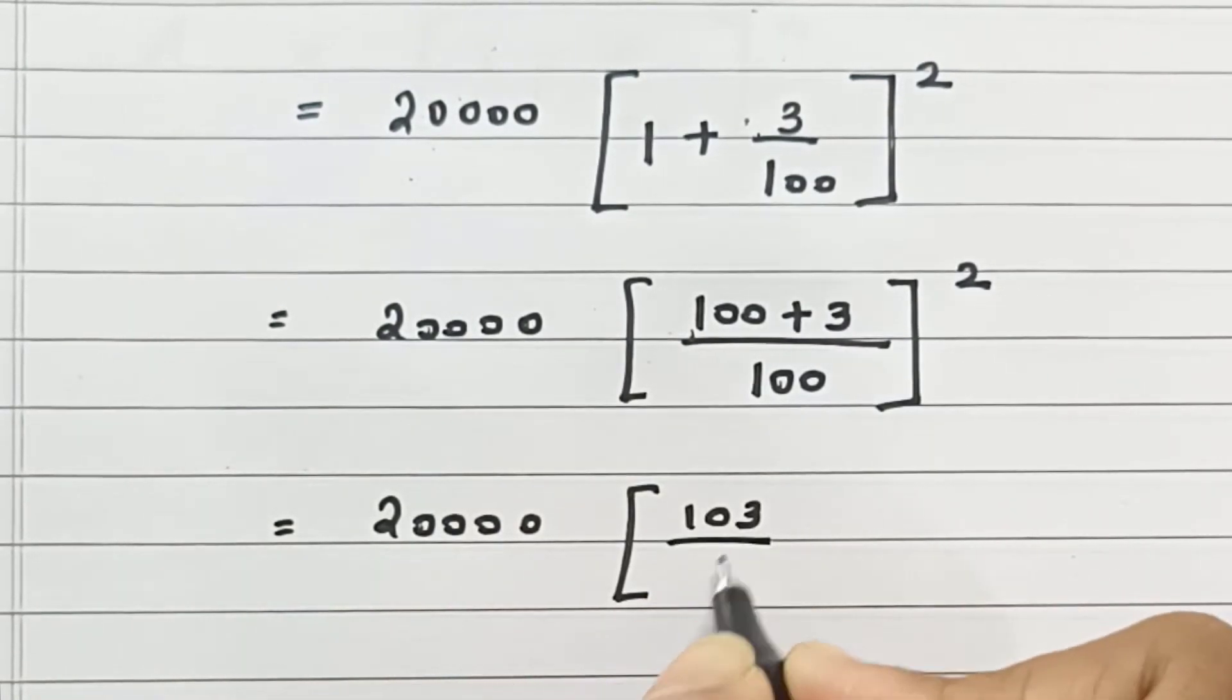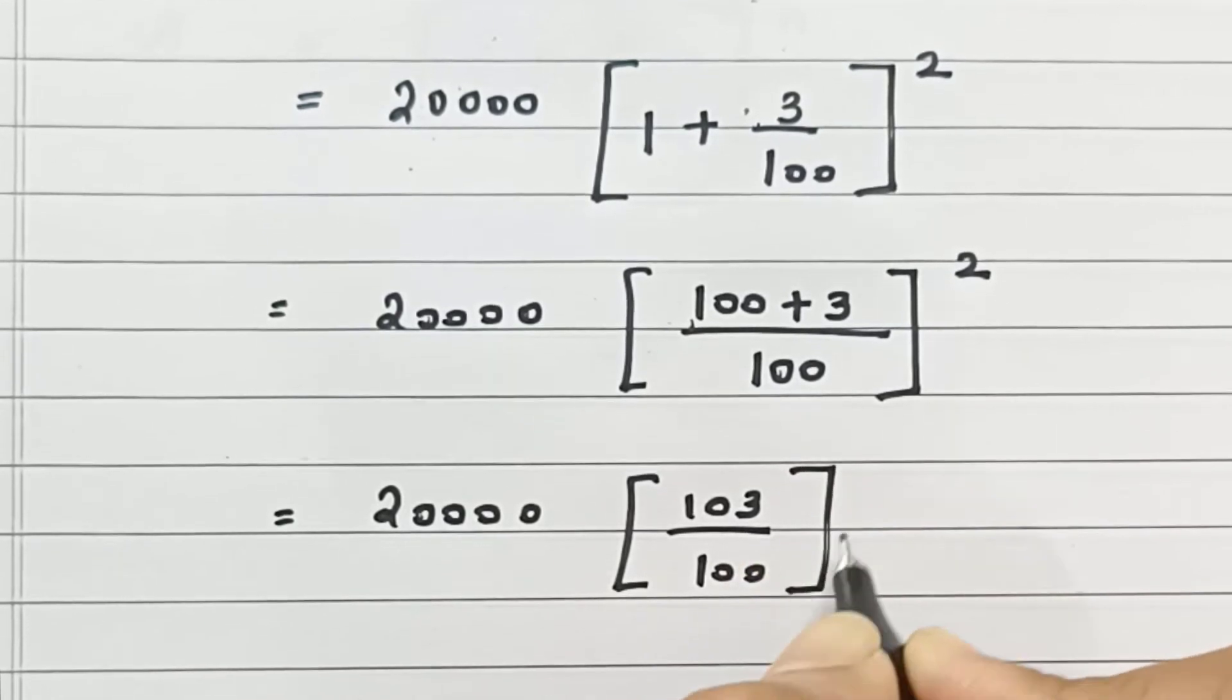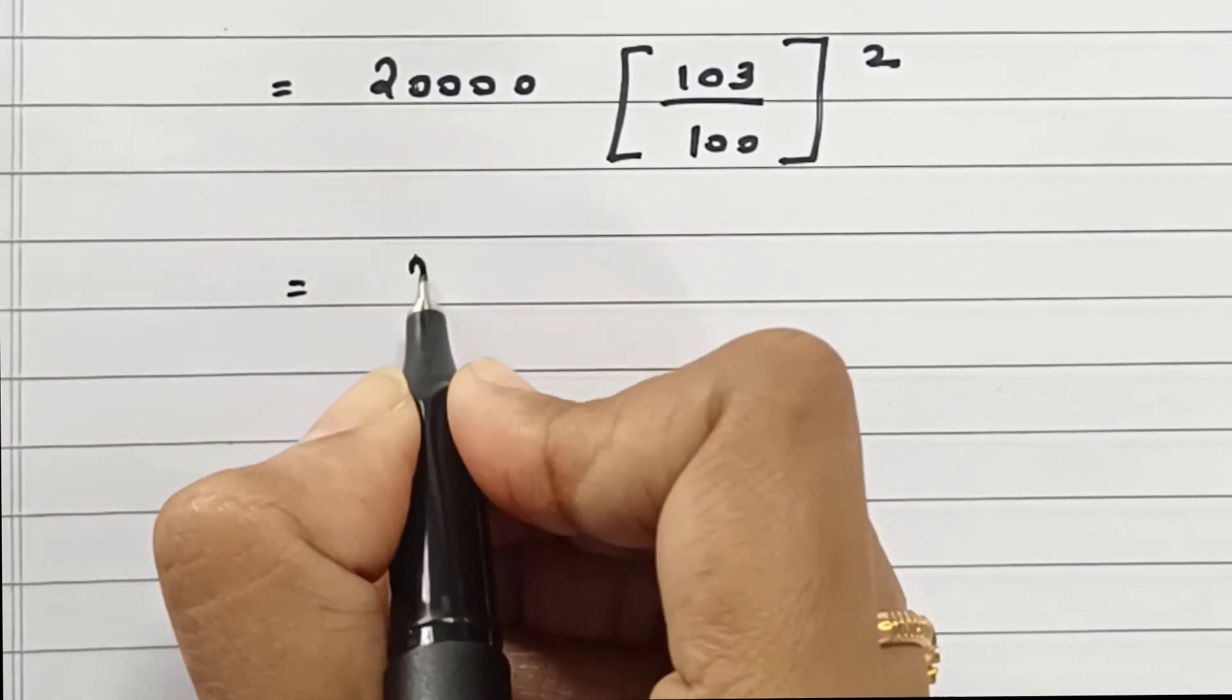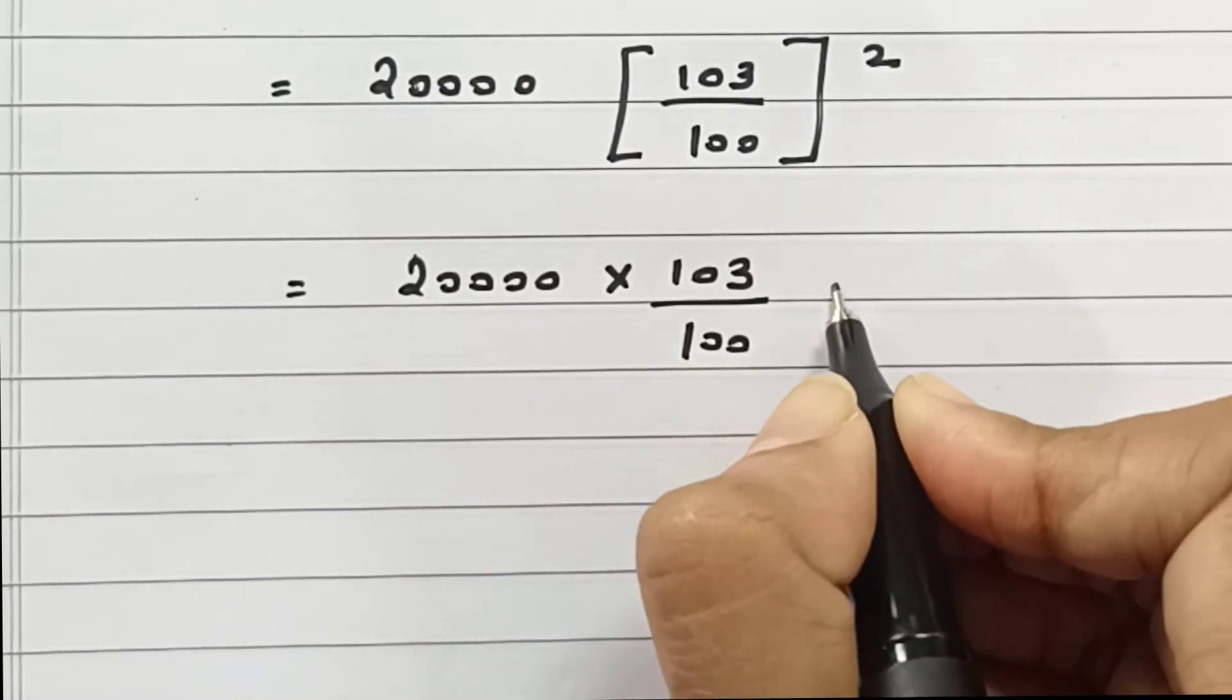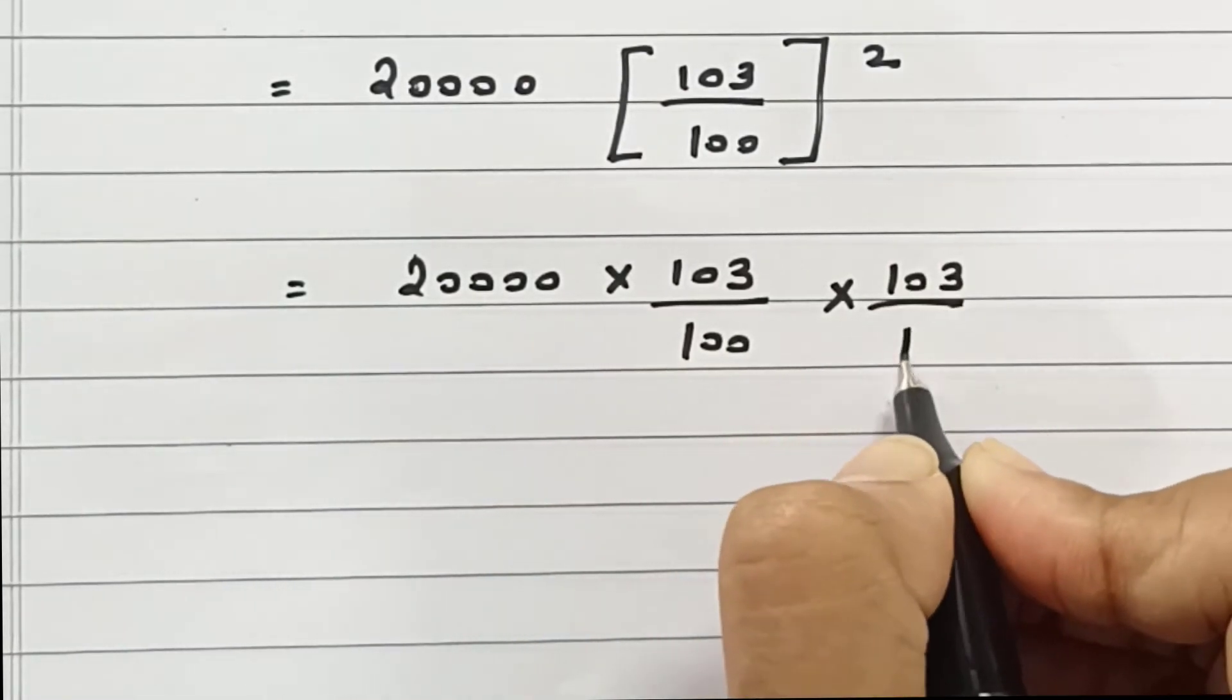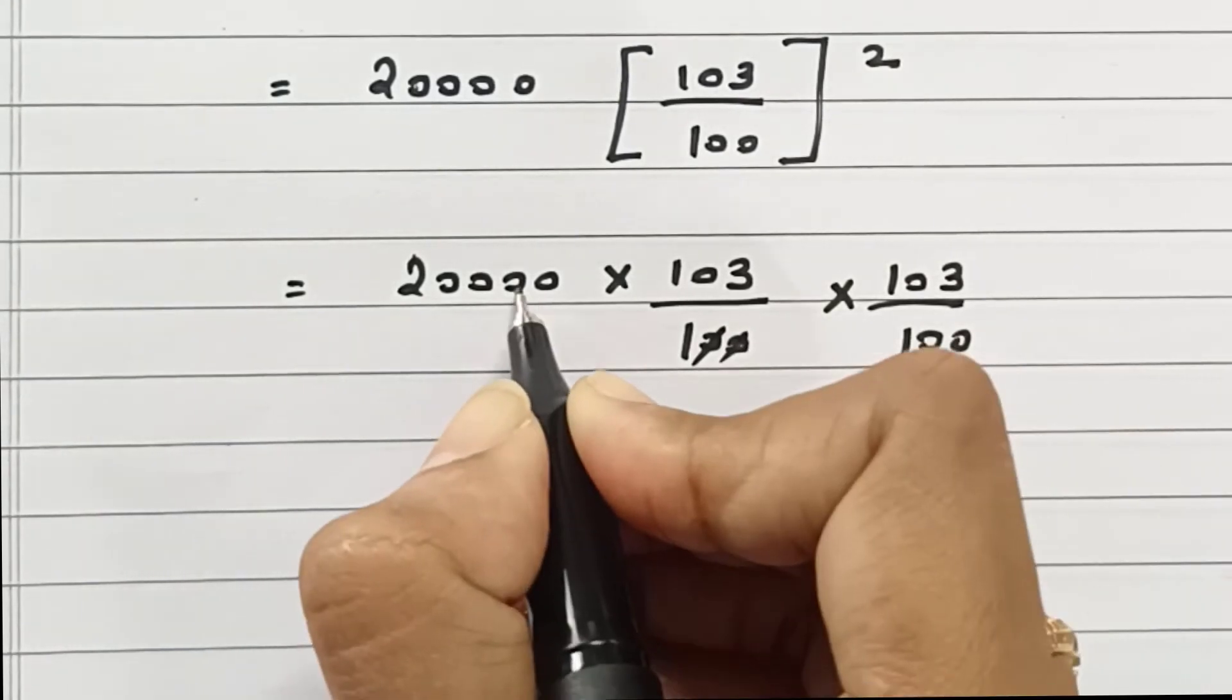Let's open it up: 20,000 into 103 by 100 into 103 by 100. Cancel the zeros.